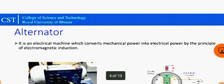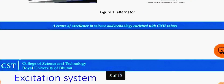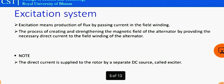An alternator is a synchronous generator. It is an electrical machine which converts mechanical power into electrical power by the principle of electromagnetic induction. Excitation system, in simple terms, means the production of flux by passing current in the field winding. It is the process of creating and strengthening the magnetic field of the alternator by providing the necessary direct current to the field winding of the alternator.